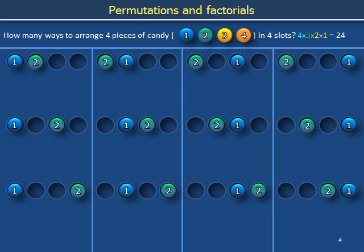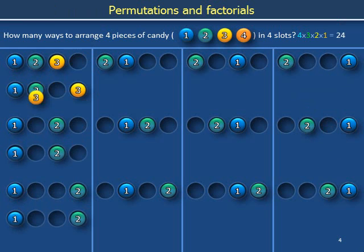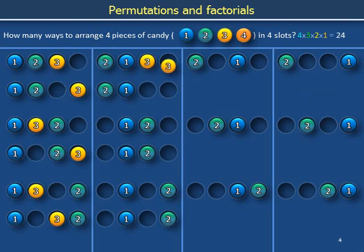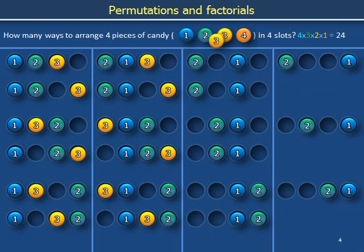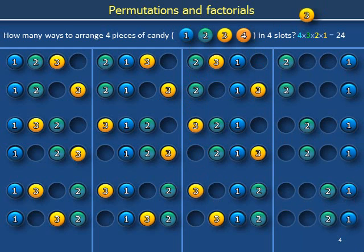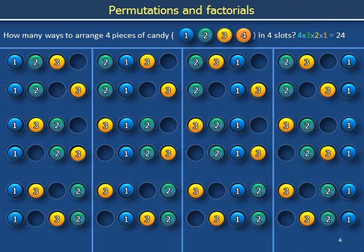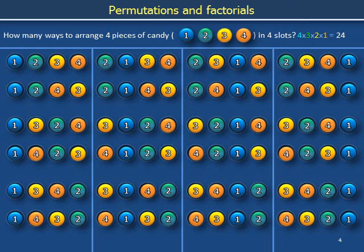How about piece of candy number three? There remain two unoccupied slots, so the yellow piece of candy can be placed in two places. The fourth piece of candy, colored orange, can only be placed in the remaining position — its location is chosen by default. There are four times three times two times one equals 24 ways to arrange four distinct pieces of candy in a row.